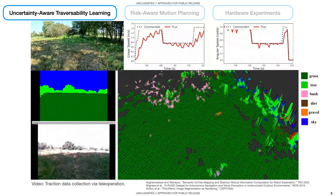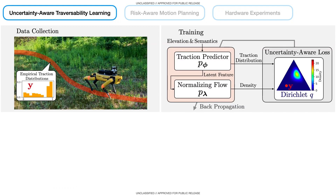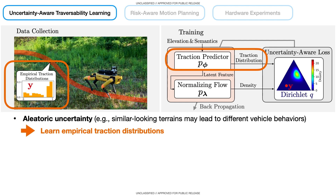Notice that the robot could not always achieve the desired velocities and could only cover a limited area. After data collection, we estimate the empirical traction distributions using histograms of discretized traction values in terrain cells traversed by the robot. By learning distributions of traction values, we capture the aleatoric uncertainty due to different vehicle behaviors when driving over terrains with similar geometric and semantic features.